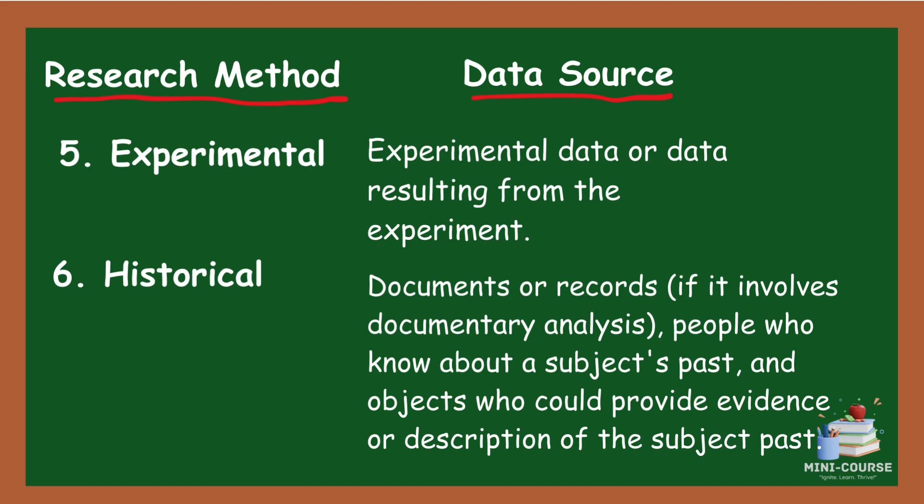5. Experimental — experimental data, or data resulting from the experiment. 6. Historical — the sources of data are documents or records if it involves documentary analysis, people who know about a subject's past, and objects which could provide evidence or description of the subject's past.